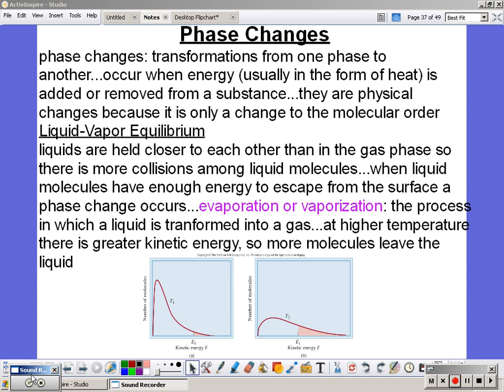Liquid vapor equilibrium. Liquids are held closer to each other than in the gas phase, so there's more collisions among the liquid molecules. When liquid molecules have enough energy to escape from the surface, a phase change occurs. So vaporization or evaporation is the process in which a liquid transformed into a gas. At higher temperature, there's a greater kinetic energy, so there's more molecules to leave the liquid.